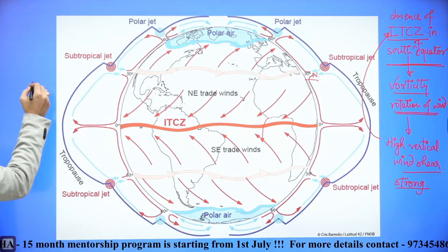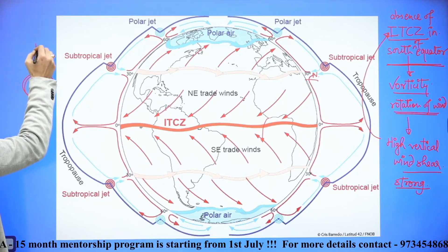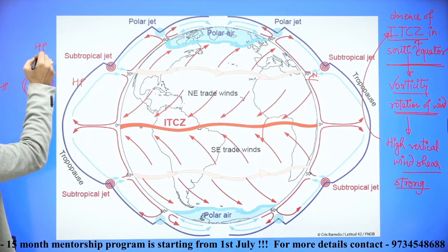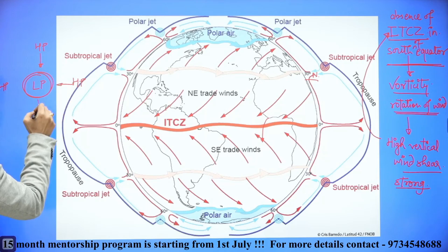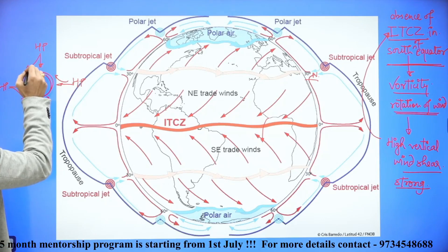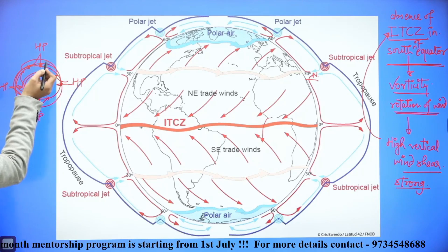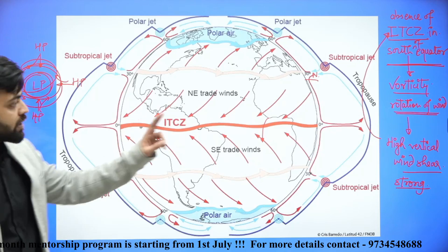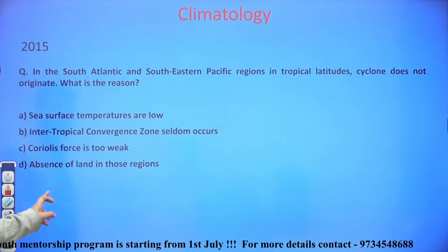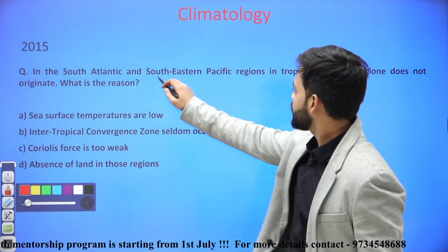In a tropical cyclone, there is a low pressure area at the centre and high pressure in the surroundings. Air moves from high pressure to low pressure, and because of the Coriolis force, it moves rightward in the northern hemisphere and leftward in the southern hemisphere, creating vorticity. However, in the southern hemisphere, there is no vorticity, which leads to the absence of cyclones in the south Atlantic and southeastern Pacific regions.